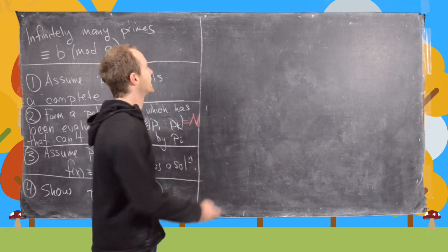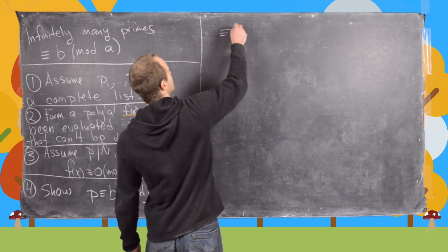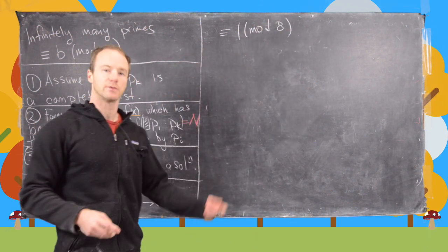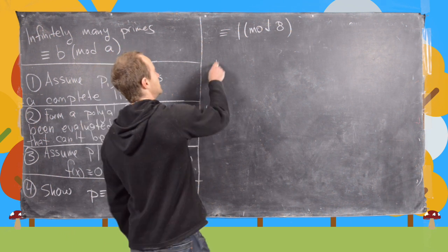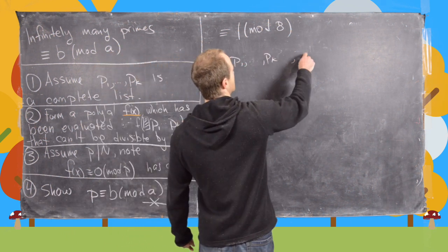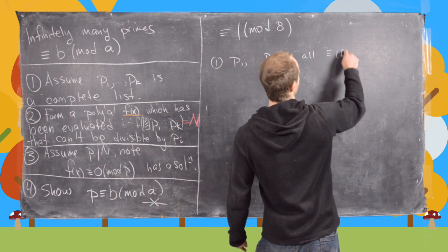Okay so now we're ready to look at one more and that's primes of the form 1 mod 8. So again using this outline let's say p1 up to pk, these are all primes congruent to 1 mod 8.